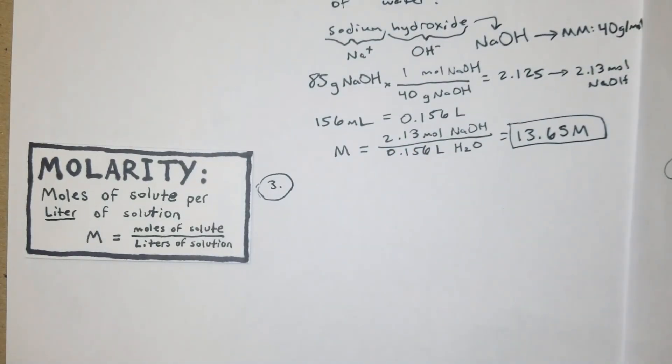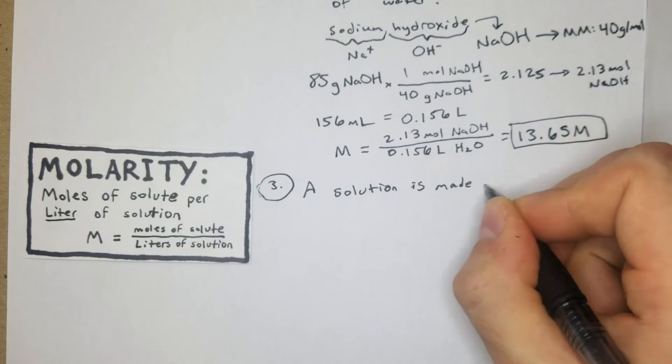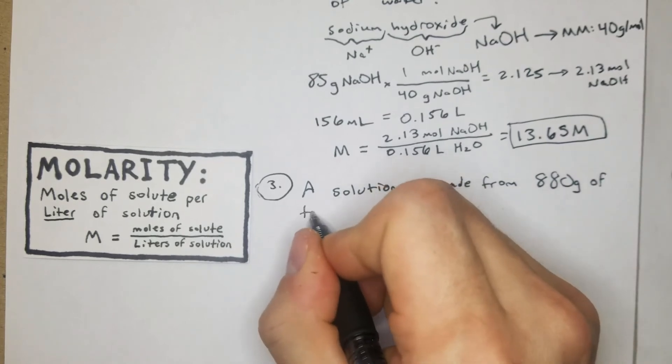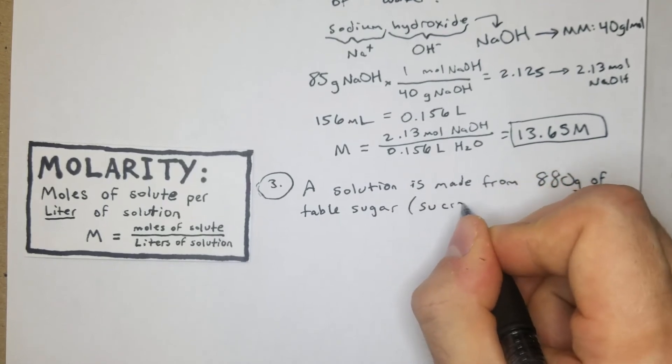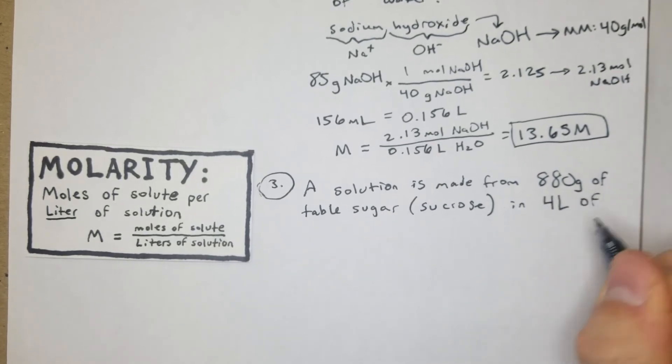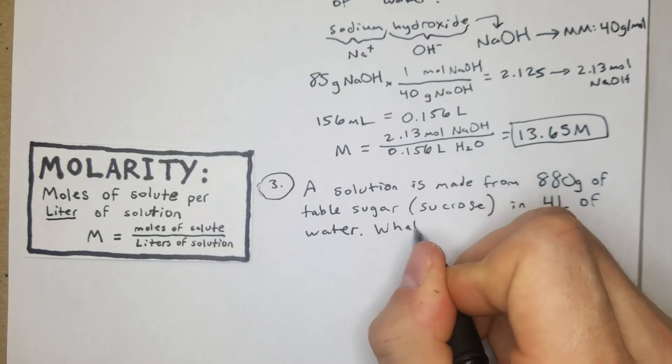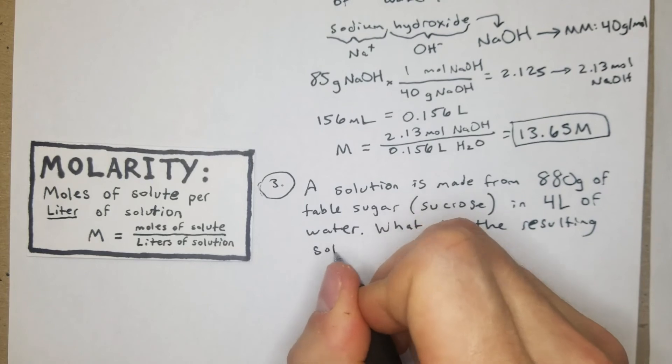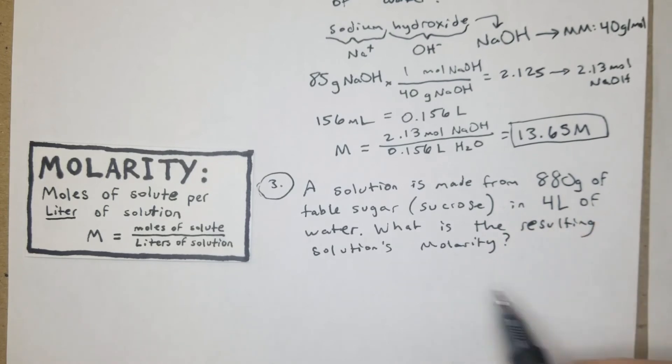For number three, we'll say a solution is made from 880 grams of table sugar, which is going to be sucrose, in 4 liters of water. What is the resulting solution's molarity?